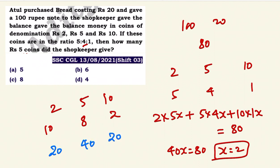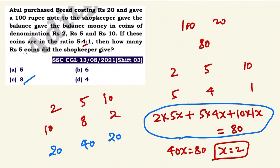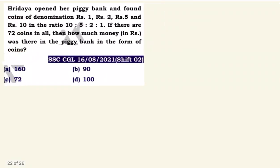So in summary: rupees 2 coins have 5x, rupees 5 coins have 4x, and rupees 10 coins have 1x. This gives us the answer for the number of rupees 5 coins the shopkeeper gave.